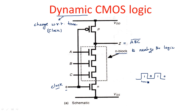When phi equals one — the on period — the NMOS transistor switches on and the PMOS transistor switches off. Since the PMOS transistor is off, there is no connection between VDD and the output, so the output is directly connected to ground through the on NMOS transistor and the N block. During the zero period — phi equals zero — the PMOS transistor turns on and the NMOS transistor turns off, so the output is directly connected to VDD.